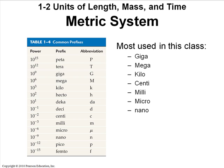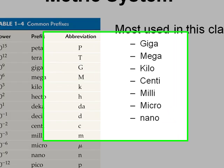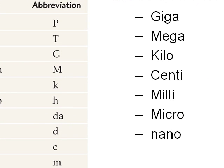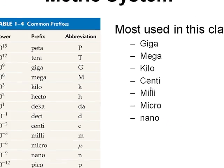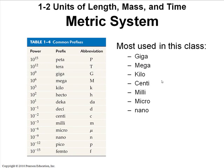The ones that you will be responsible for knowing the symbol and the power that they represent will be giga, mega, kilo, centi, milli, micro, and nano. So you should expect for there to be questions on the first test about what power of ten does kilo stand for? What power of ten does micro stand for? What is the symbol for micro? What is the symbol for giga, et cetera?